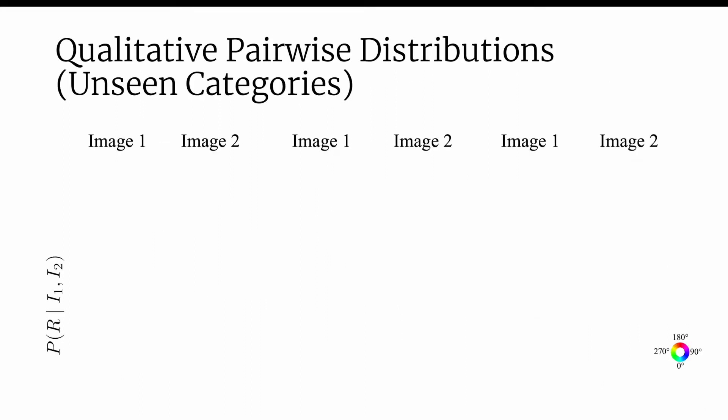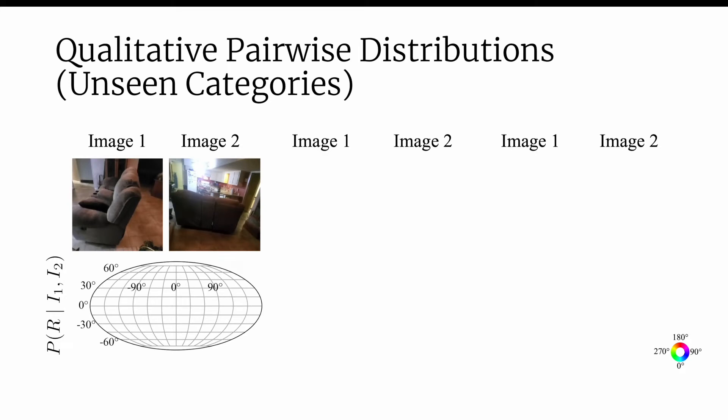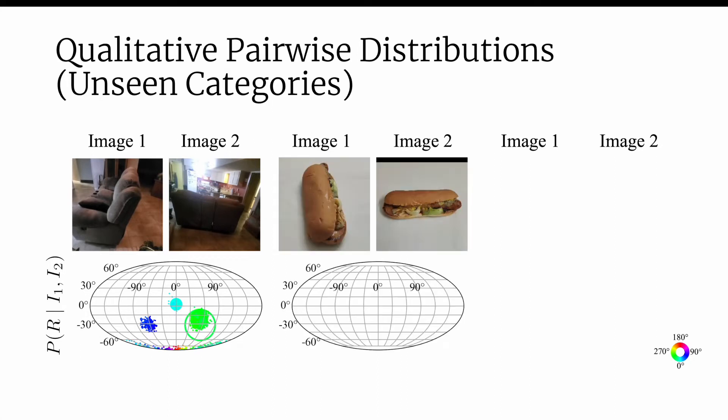Here we visualize some pairwise distributions on held-out object categories. Given two images of a couch, we see that our method predicts four different modes, roughly corresponding to 90 degree increments. We visualize the ground truth relative rotation as the center of the open circle. Our method assigns the greatest probability to the correct mode. Next we have two images of a hotdog. Our approach correctly predicts a single mode, perhaps because the pose is unambiguous due to the onions.